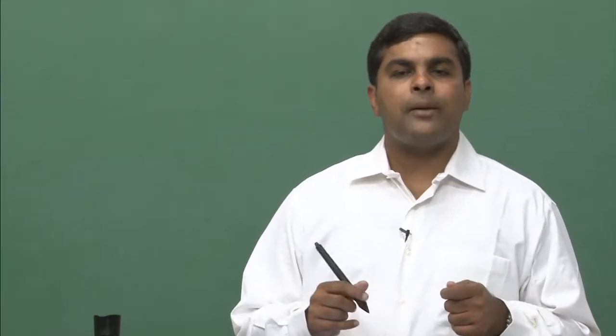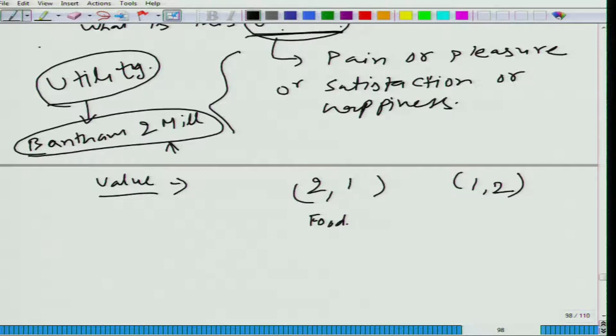What is more important is that you as an individual should be able to compare two different bundles. You should be able to say let's say if we have bundle 2 comma 1 and 1 comma 2, you can have 2 comma 1 as food comma cloth or it can be guava comma mango, doesn't matter. Let us take food comma cloth.